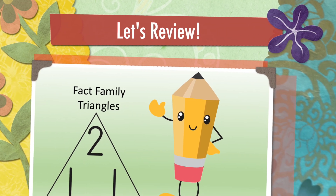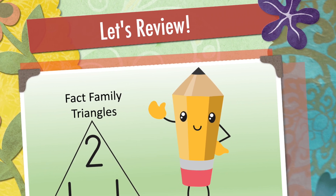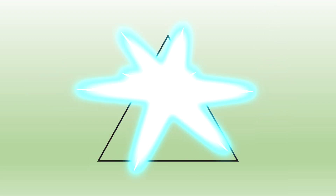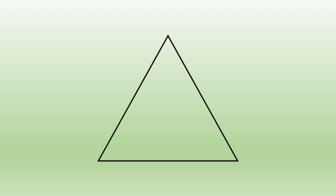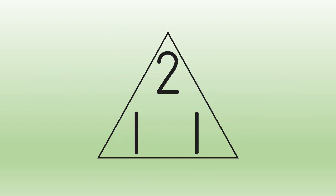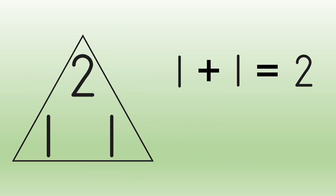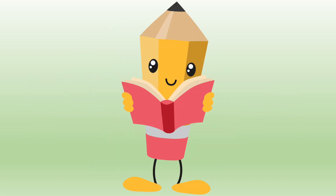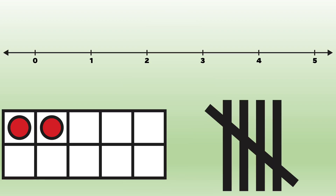Let's review what Percival discovered. Percival learned that a fact family is a group of numbers that go together to make addition and subtraction number sentences. We can use a fact family triangle to find these. With the family one, one, two, we get two sentences: one plus one equals two, and two minus one equals one. Percival also saw that number lines, tens frames, and tally marks are great for helping us see these number sentences in different ways.